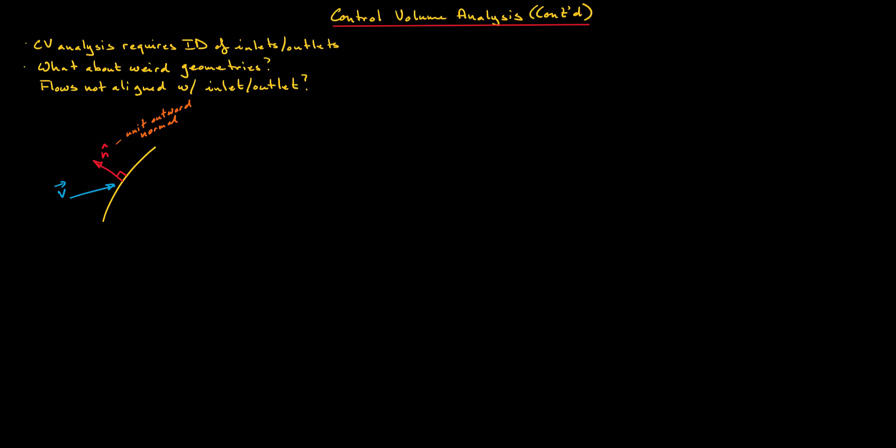As we saw in the previous video, control volume analysis requires the identification of inlets and outlets. For the conservation of mass in a control volume, the time rate of change of the mass inside the control volume is a balance between the amount coming in and the amount coming out. Knowledge of the inlets and outlets is of utmost importance.